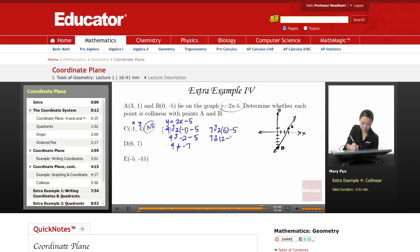This is 12 minus 5. So 7 equals 7. So this is yes, it is collinear with the points.